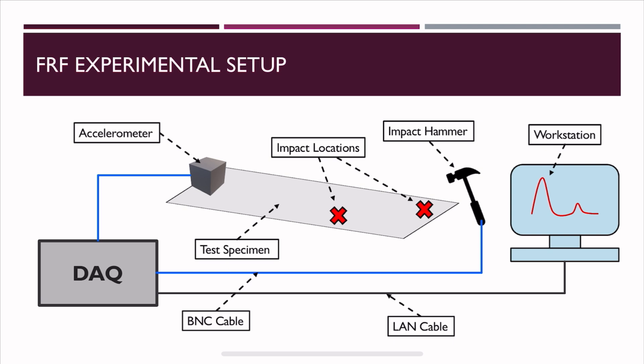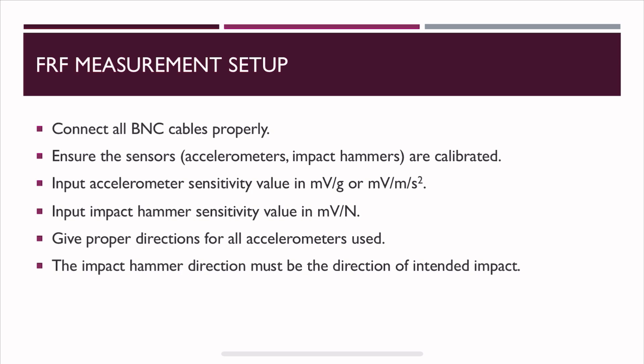There are different measurement approaches: the roving accelerometer method, where you keep impacting at the same location and move the accelerometer to different points; and the roving hammer method, where the accelerometer stays in one position and the hammer moves to different locations. Before starting measurement, ensure all BNC cables are connected properly, sensors are calibrated, proper sensitivity values of accelerometer and hammer are input, and correct directions for all accelerometers and impact direction are specified — especially important for calculating mode shapes.